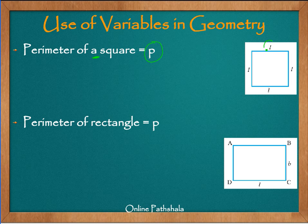The square, as you can see in this figure, has used the letter l to denote the length, and we are interested in finding out the perimeter of this. Can we come up with a rule to find out the perimeter of a square represented by the letter p using the concept of variable? We will write p equals, and if you remember, the way we find out the perimeter is we start at a vertex or a point — let us call this point A.